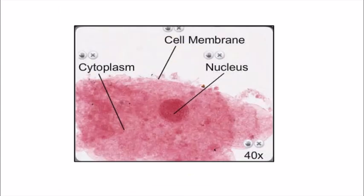Here you can see the cytoplasm under the microscope at 40x magnification. Using an electron microscope, we can also see the organelles. You can easily see that the cytoplasm is present and is visible. Cell membranes and the nucleus are also visible. If you want to see the cell organelles in detail, you have to use a more powerful microscope — the electron microscope.